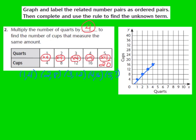To find the unknown term, I multiply 5 times 4, which gives me 20. So that last ordered pair becomes (5, 20). I'll graph it — from the origin, move over 5 on the x and up 20 on the y — and then extend our line through that point. The point falls right on the line we already drew, which makes sense. We've now graphed and labeled all related number pairs as ordered pairs, and completed the rule to find the unknown term.